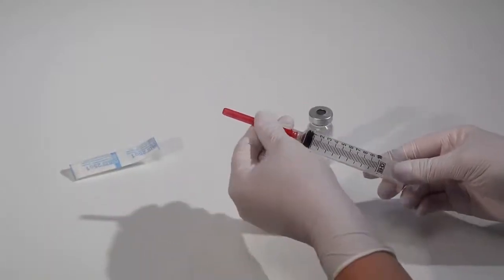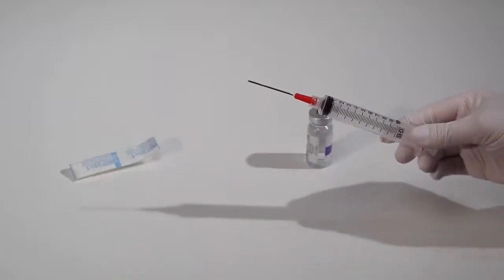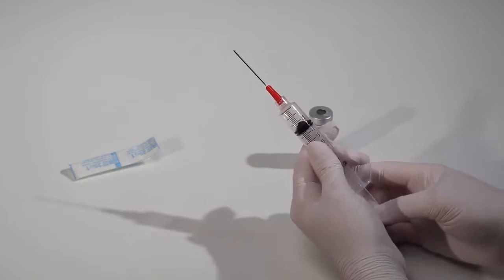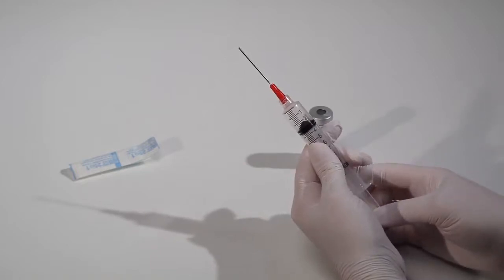Remove the needle shield from the blunt fill needle. Now, draw into the syringe a volume of air equal to the amount of medication or fluid needed. Be careful to avoid touching the needle on any surface to maintain its sterility.